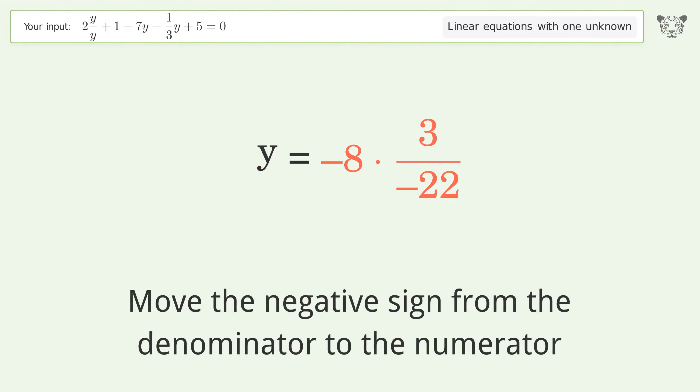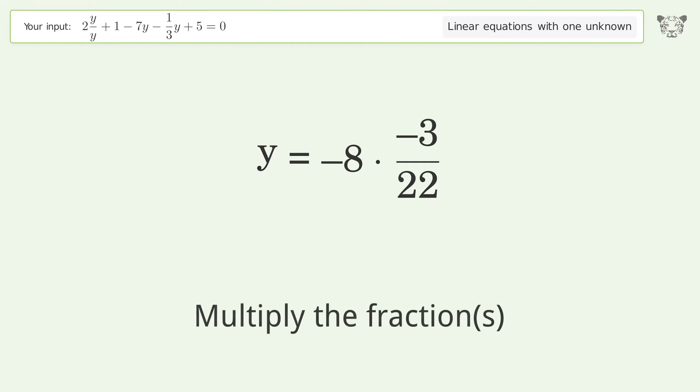Move the negative sign from the denominator to the numerator. Multiply the fractions. Simplify the arithmetic. And so the final result is y equals 12 over 11.